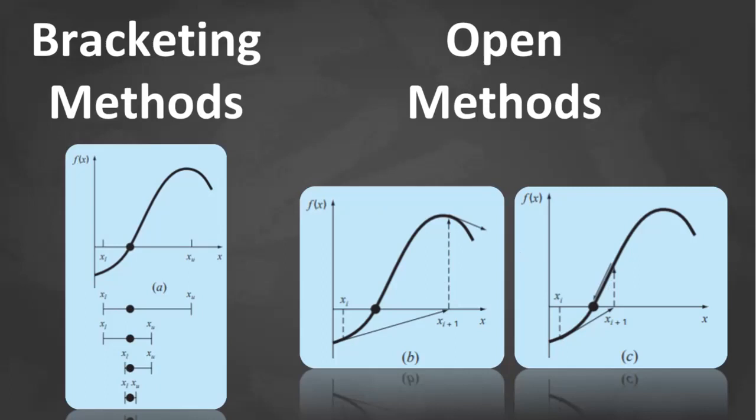In contrast, the open methods described in this lecture series are based on formulas. If the bracketing methods are based on graphical insight, this one is based on formulas. The open methods require only a single starting value of x, or two starting values that do not necessarily bracket the root. As such, they sometimes diverge or move away from the true root as the computation progresses. This kind of weakness is shown in this figure.